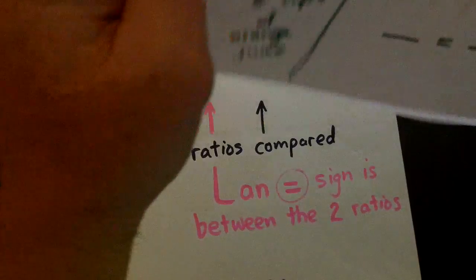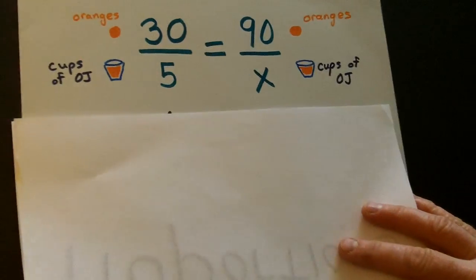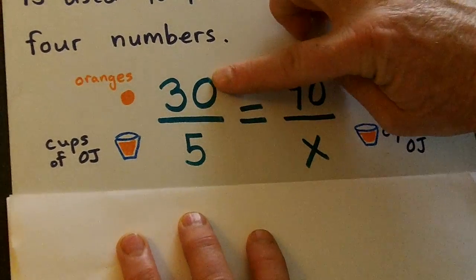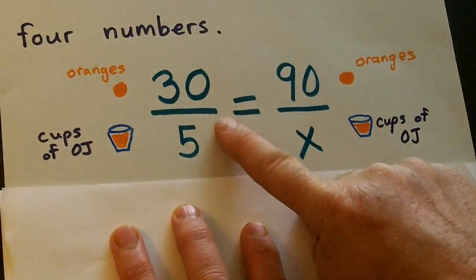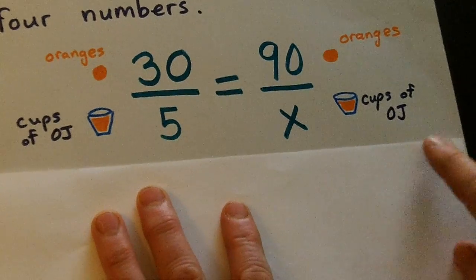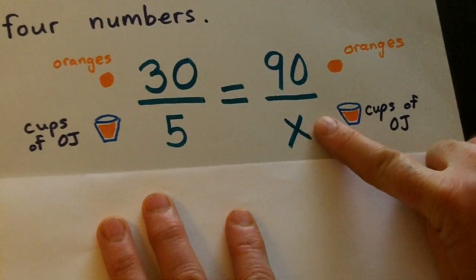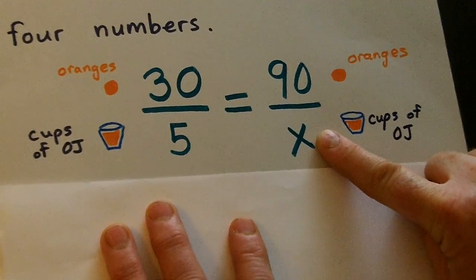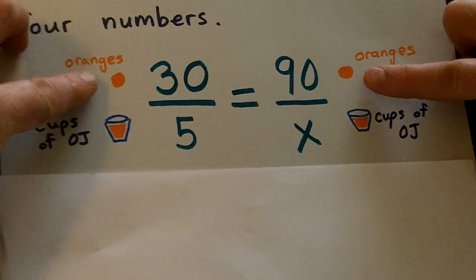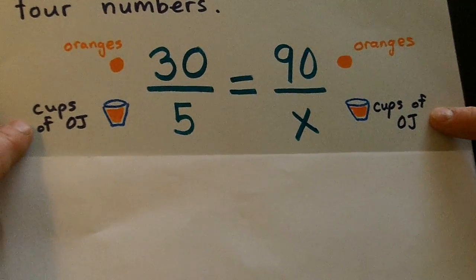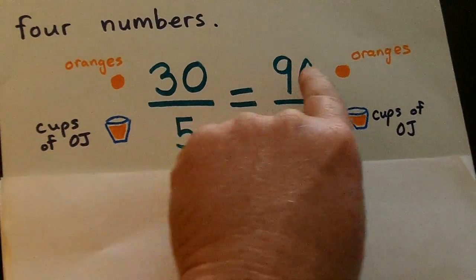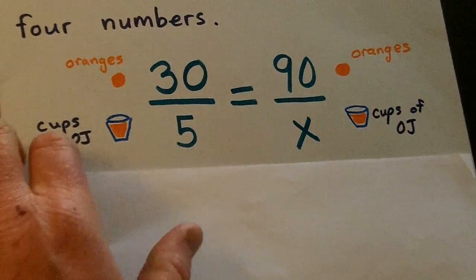Now, what we're going to have to do is set up a proportion like this. 30 oranges is going to make five cups of OJ. How many cups of OJ, now this is our unknown, that's our x, will come from 90 oranges. Notice I have the oranges both on top and the cups of OJ both on the bottom. And we kind of say that 30 makes five, how many will 90 make.